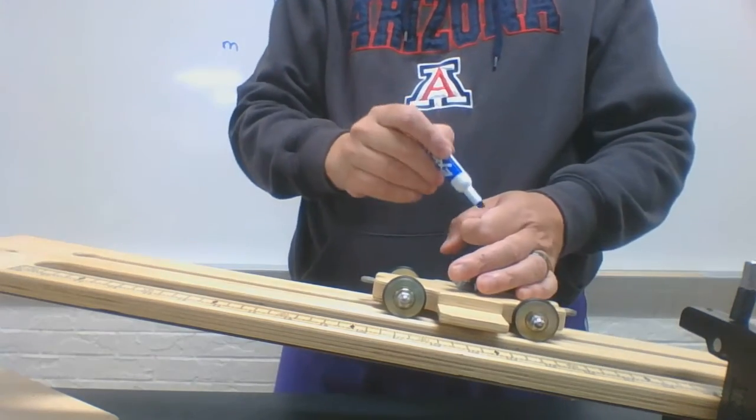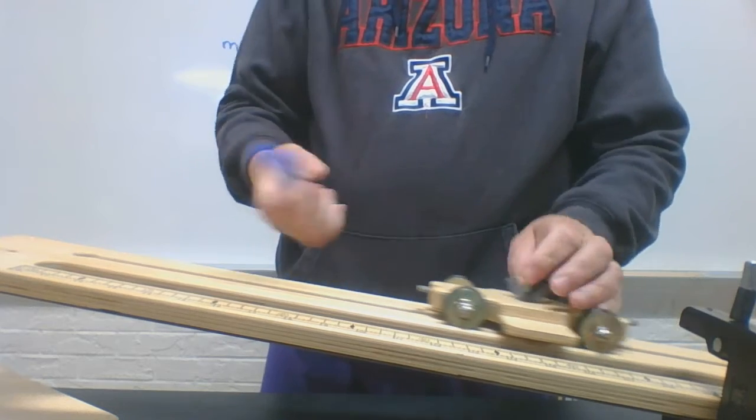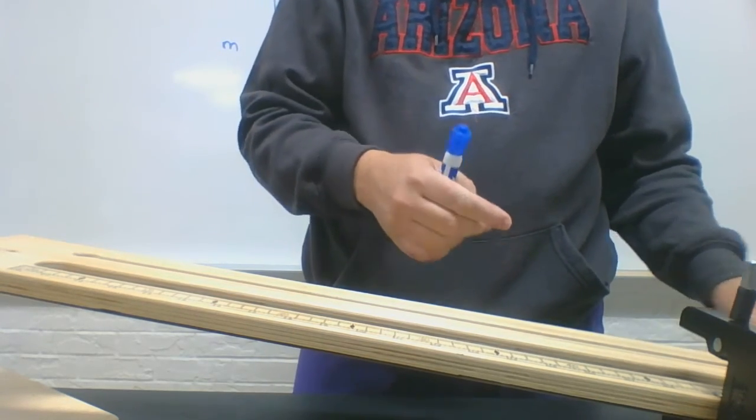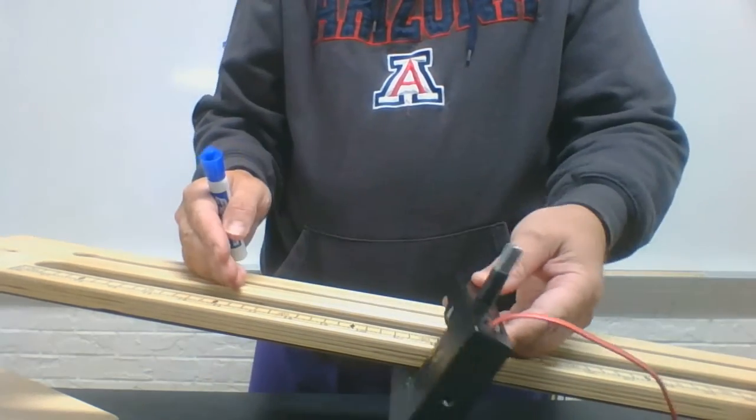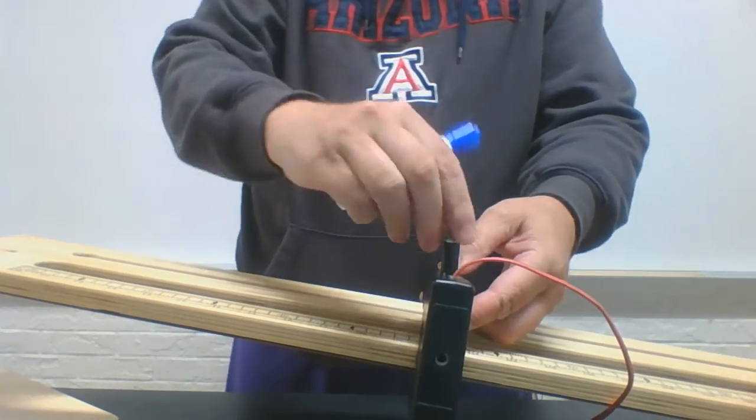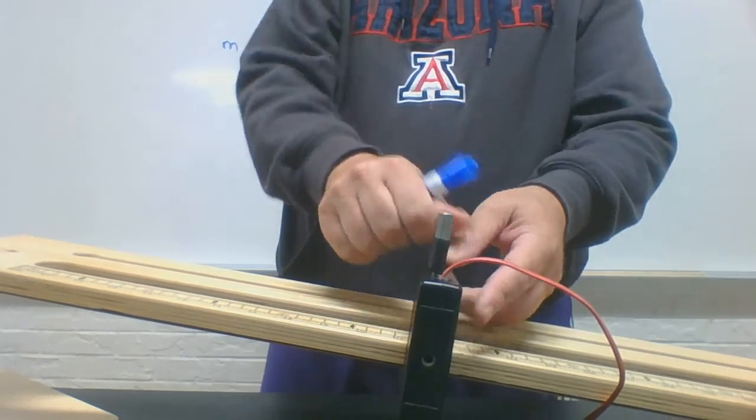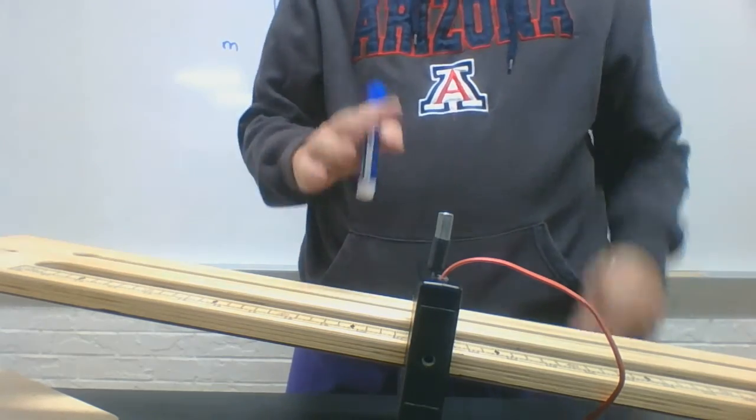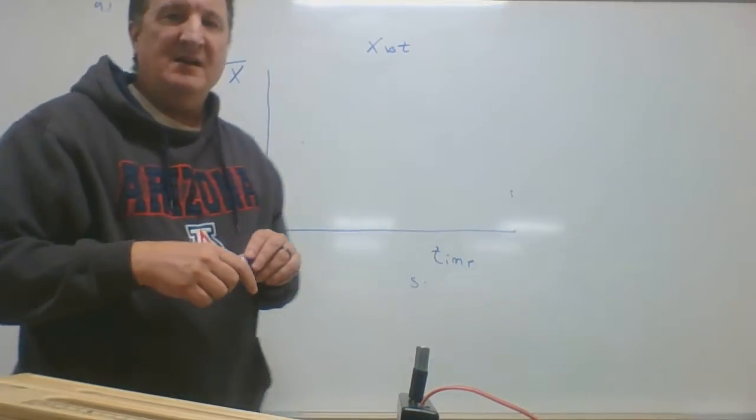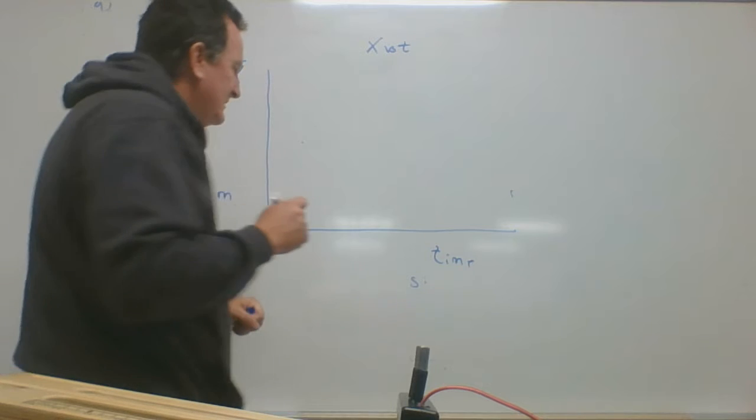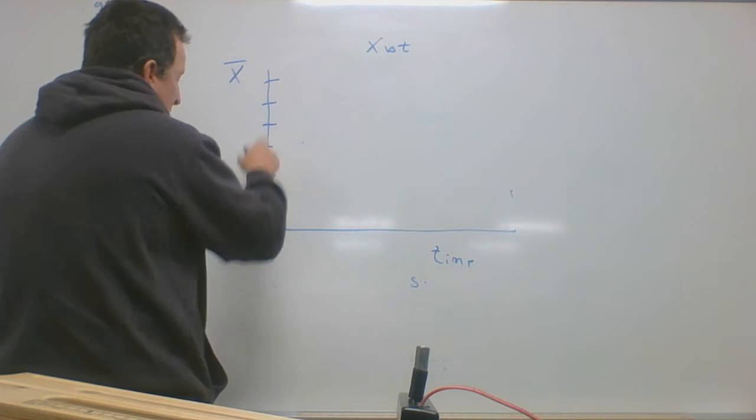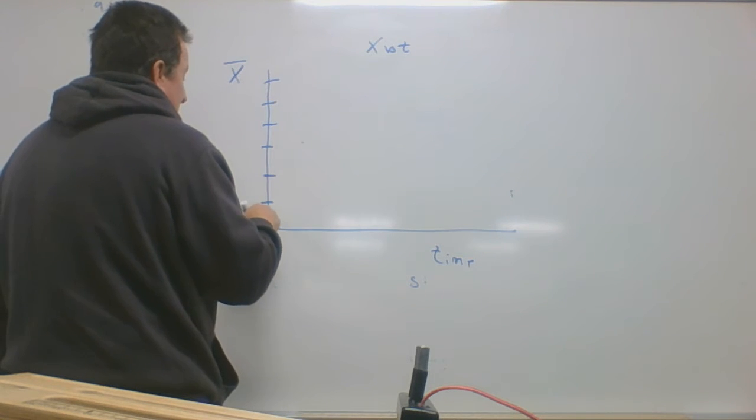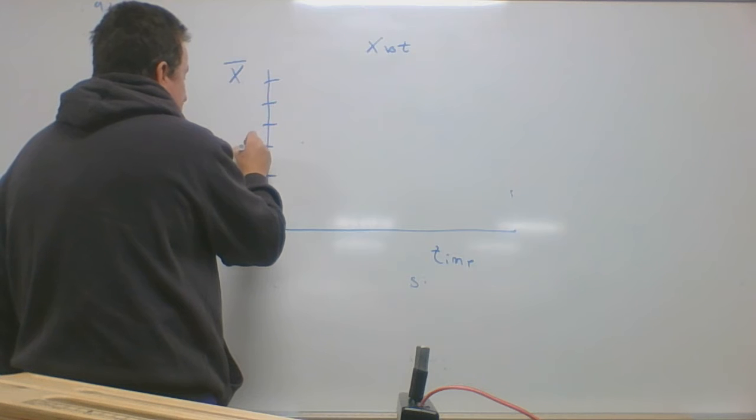Now, how do I record the velocity? Let's say I want to know how fast it's going in a certain region. What I can do is put this at a certain position. I'm going to put this at 30 centimeters or 0.3 meters from the origin.